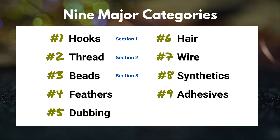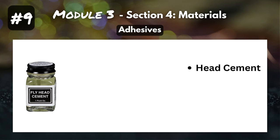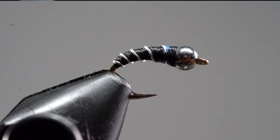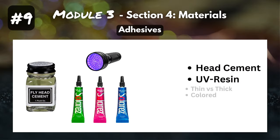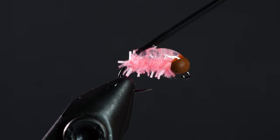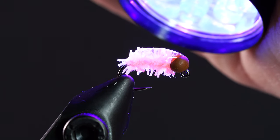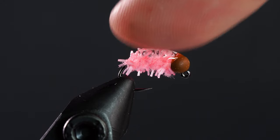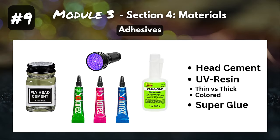Our last category, number nine: adhesives. First on our list is head cement, which has a wide variety of applications — you could use a dab for extra support on trimmed thread or to secure a bead in place on a nymph. Next is UV resin. You've got thick, thin, and different colored UV resin, but it all works the same: you squeeze it out of a tube and then hit it with a UV flashlight, and that UV light hardens the resin on your fly. People have gotten really creative with this throughout the fly tying world. Last on our list of adhesives is classic super glue — there are a number of times when you'll use this to bind down some materials or to make your fly more durable.